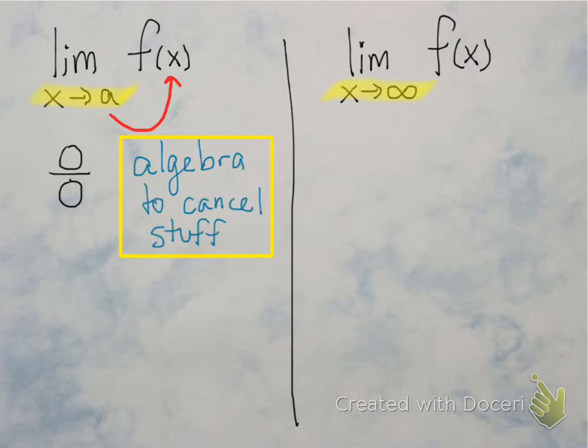If you have x approaching a, you can just take a and plug it into the function. But if a is not in the domain of f, you might get something like 0 over 0, which is not a number and it's not an answer for a limit. So what you have to do if you get 0 over 0 is a bunch of algebra to try to cancel some stuff — we'll talk about that later.